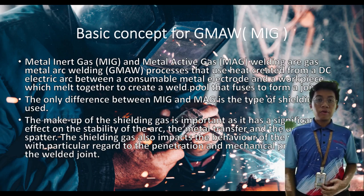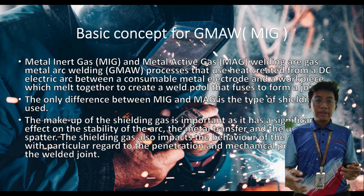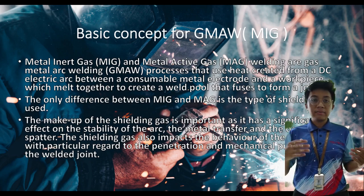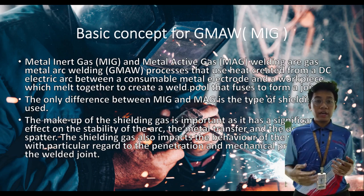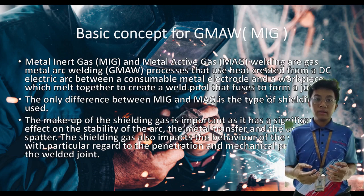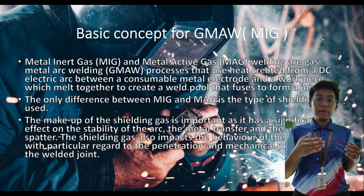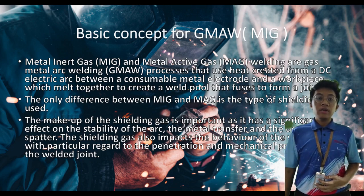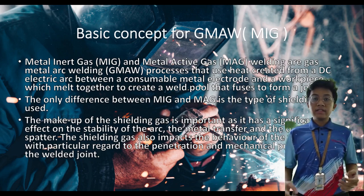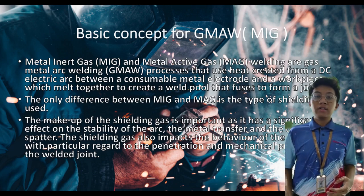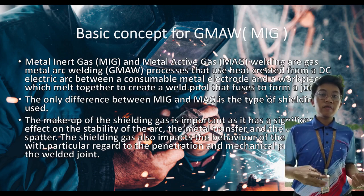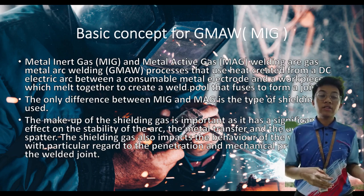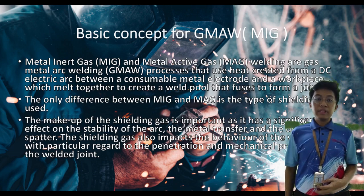The basic concept: gas metal inert gas and metal active gas welding are gas metal arc welding processes that use heat created from a DC electric arc between a consumable metal electrode and a workpiece, which melts together to create a weld pool used to form a joint. The only difference between MIG and MAG is the type of shielding gas used. The makeup of the shielding gas is important as it has a significant effect on the stability of the arc, the metal transfer, and the degree of spatter. The shielding gas also impacts the behavior of the weld pool with particular regard to the penetration and mechanical properties of the weld joint.